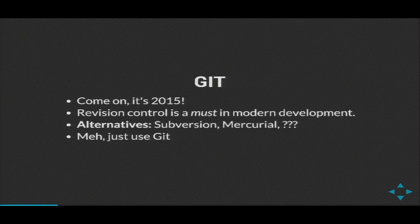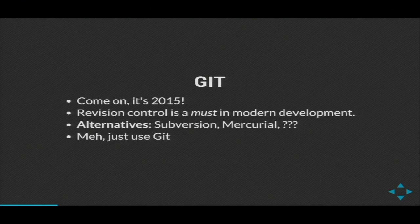If something happens in your code, you want to be able to go back in time to when things actually worked. Revision control can help you with that. Also, if you're working on a small team — whether there are three people in your office or 15 people spread out all over the world — you need a tool like revision control to keep all of your developers on the same page.